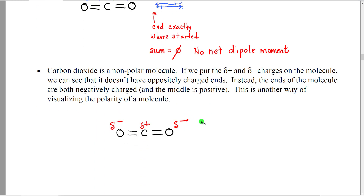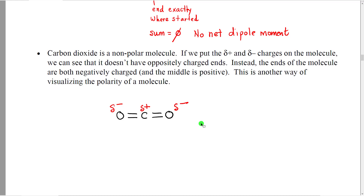If we redraw CO2 in terms of where the partial positives and partial negatives are, we see that CO2 has two negative ends and a positive middle. Therefore, this is not a polar molecule — a polar molecule is one where there are ends that are oppositely charged.